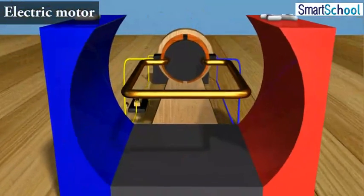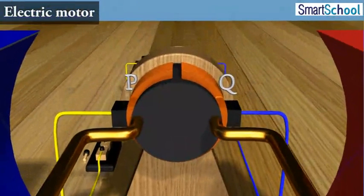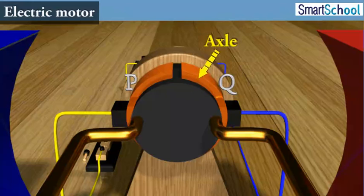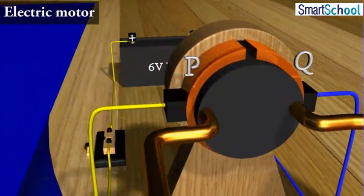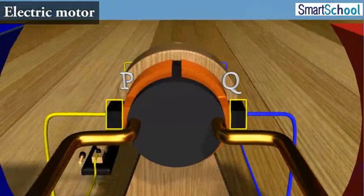The ends of the coil are connected to the two halves P and Q of a split ring. The inner sides of these halves are insulated and attached to an axle. The external conducting edges of P and Q touch two conducting stationary brushes X and Y respectively, as shown.